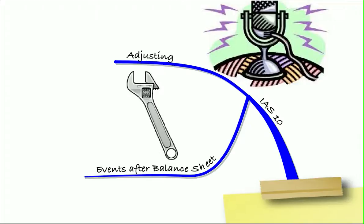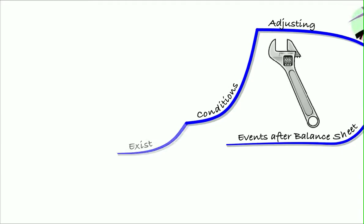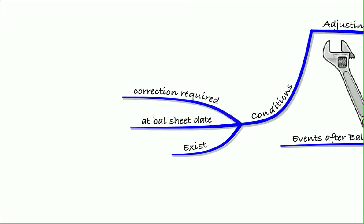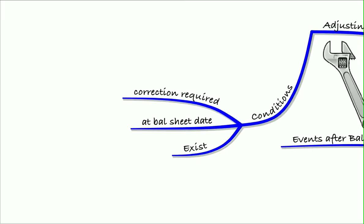We needed to know the difference between adjusting events and non-adjusting events. Remember, adjusting events were evidence of conditions that existed at the balance sheet date. We just weren't aware of them. We've now become aware of them, so we need to correct the financial accounts.